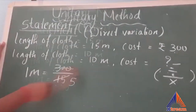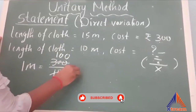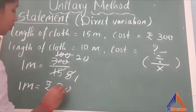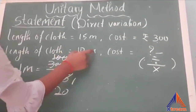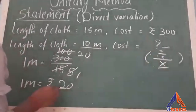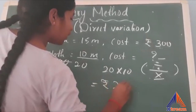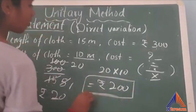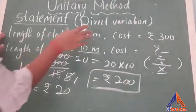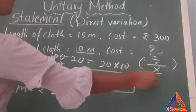So, 300 divided by 15 equals rupees 20. Therefore, the cost of 1 meter cloth is rupees 20. Now we multiply to find the cost of 10 meters: 20 multiplied by 10 equals rupees 200. So the cost of 10 meters of cloth is rupees 200. This is how we solve a direct variation problem using the statement method — first dividing, then multiplying.